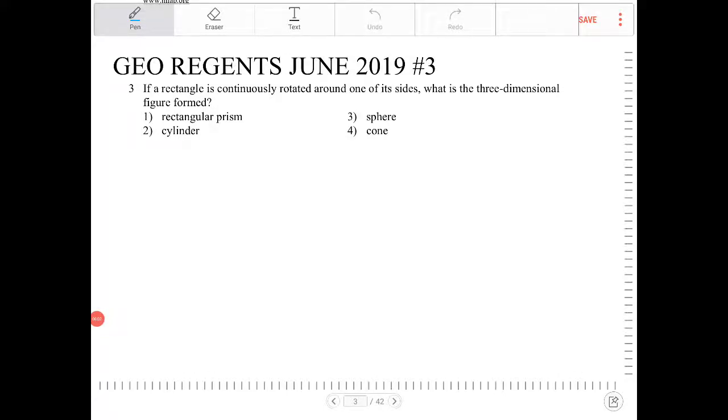If a rectangle is continuously rotated around one of its sides, what is a three-dimensional figure formed? So, what you're going to do is let's draw a rectangle.